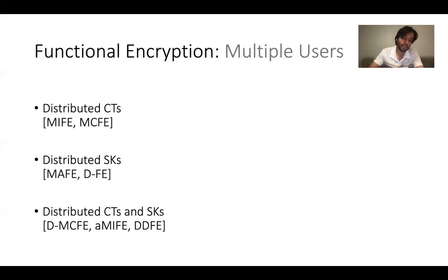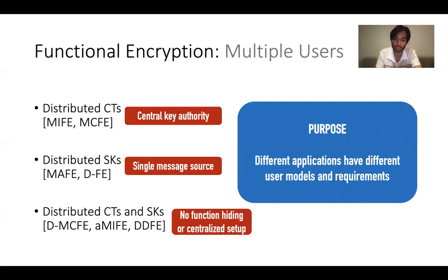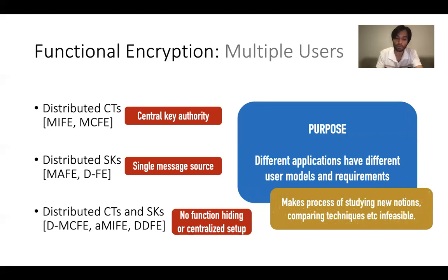Overall, this shows there is a vast unexplored universe of encryption functionality yet to be studied. The study of functional encryption in the multi-user setting has been similar to the pre-single-user FE days, where many new models were proposed and studied. It has often been difficult to understand how they compare to each other, whether they use related techniques, and what is known in terms of feasibility — as we have these different models of multi-user FE systems like distributed ciphertexts, distributed keys, and both. The process of studying new notions and comparing techniques has become very unwieldy.